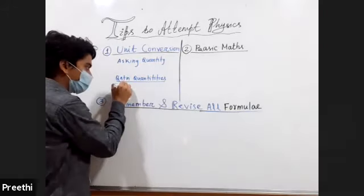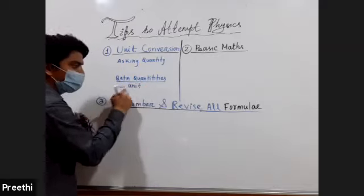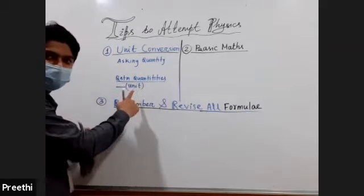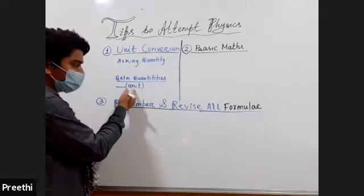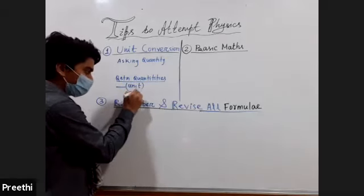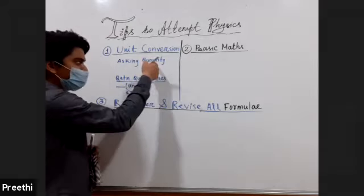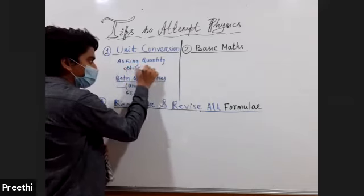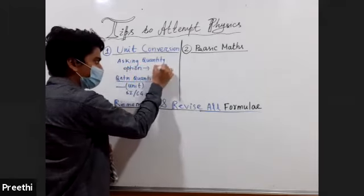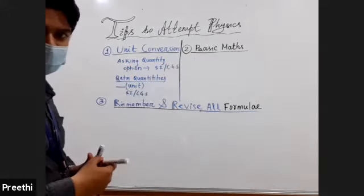There will be many quantities in question. They will be given in terms of some unit, different units. So you need to be given on this unit, you can understand which quantity it is and you check this unit is SI or CGS. Asking quantity unit you can see the options, you can see the options. So in option to check also it is given in the SI or CGS or any other unit.